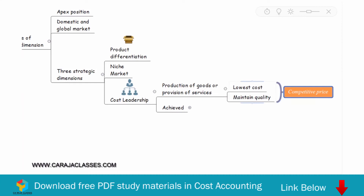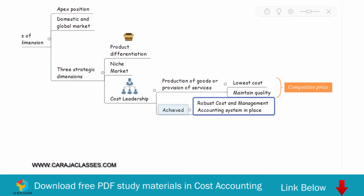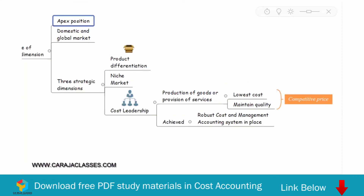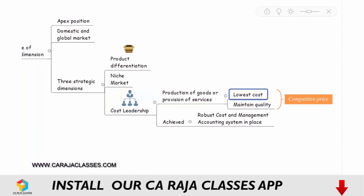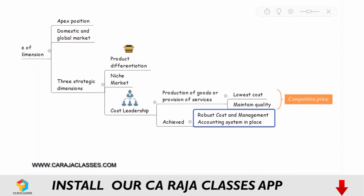Cost leadership can be achieved by having a robust cost and management accounting system in place. That is why we need cost accounting — because to reach apex position in domestic as well as global markets, we must fit into one of the three strategic dimensions, and cost leadership is achieved through a strong cost and management accounting system.